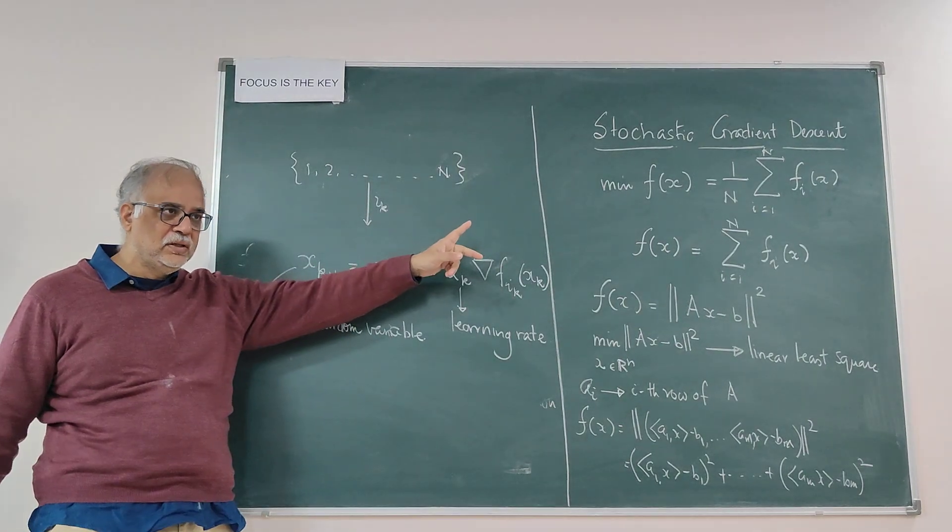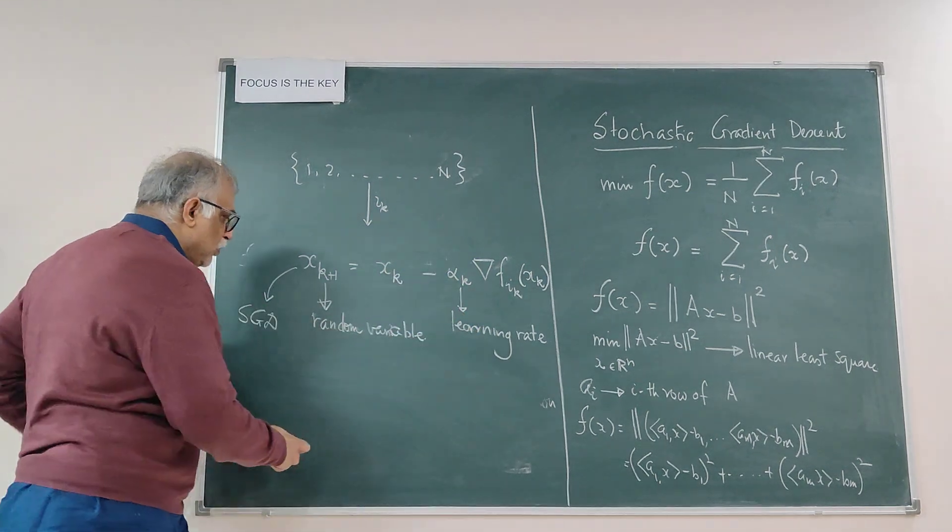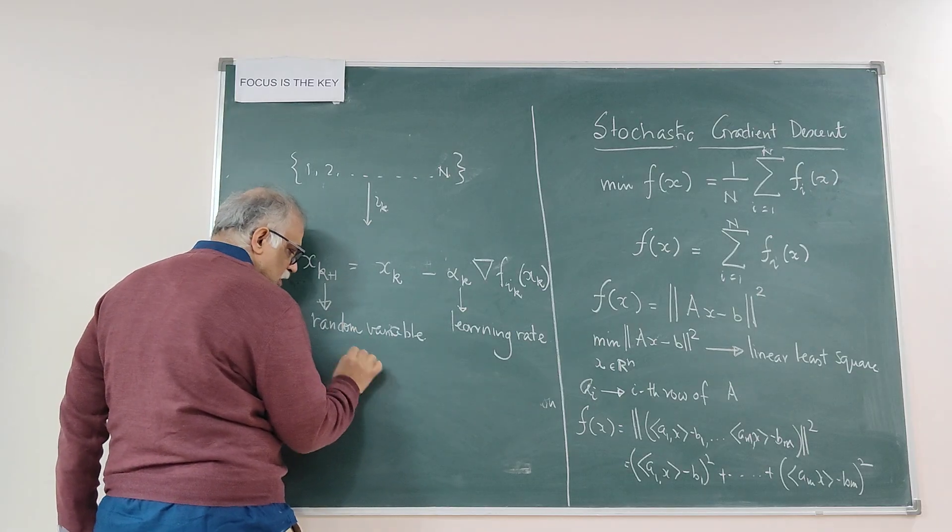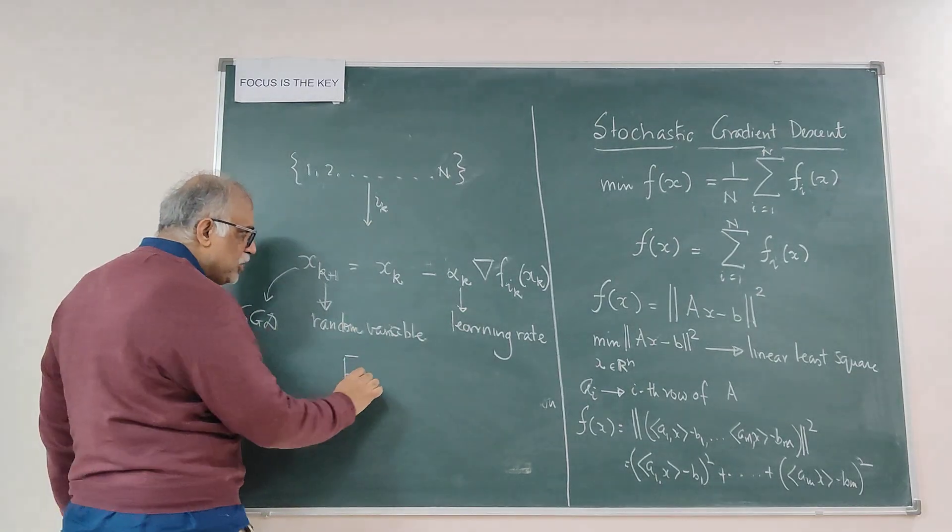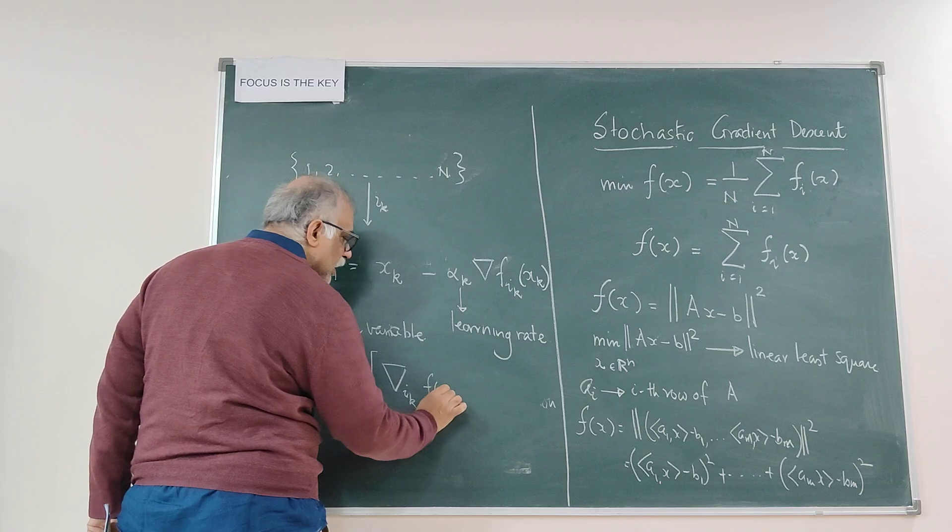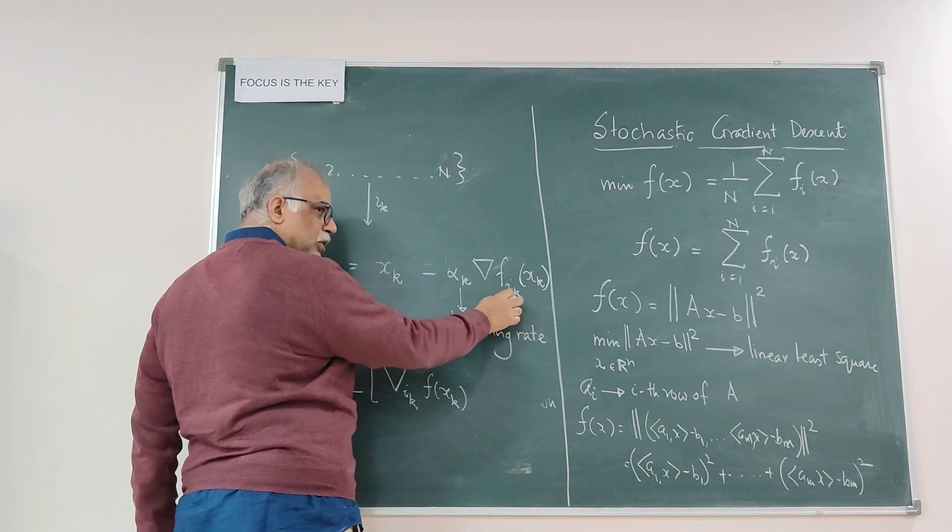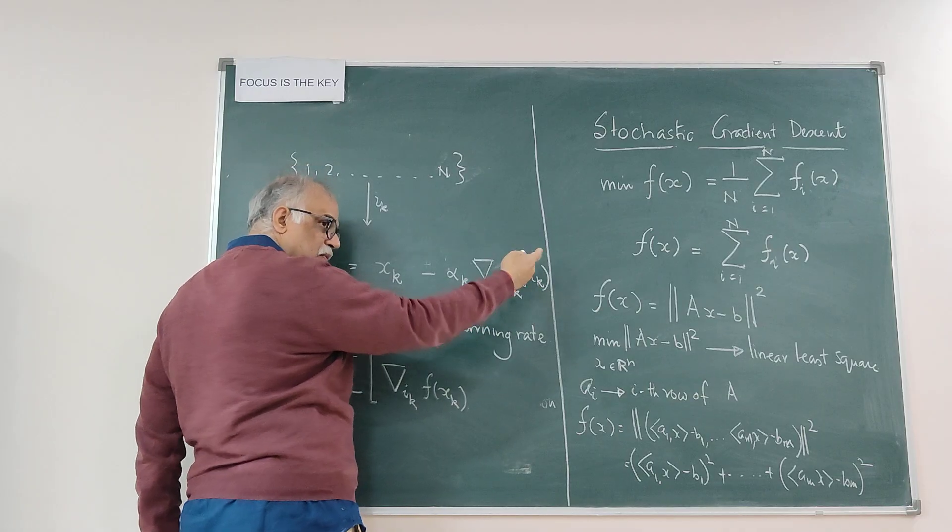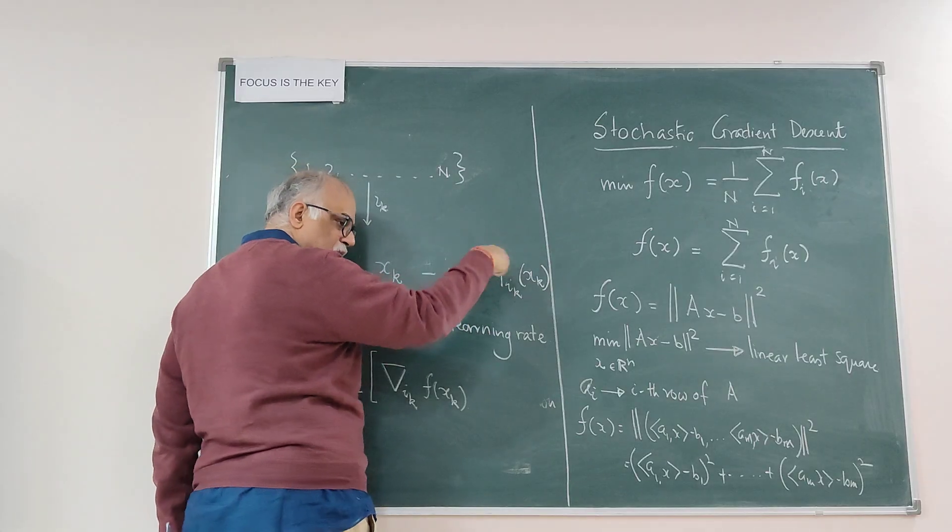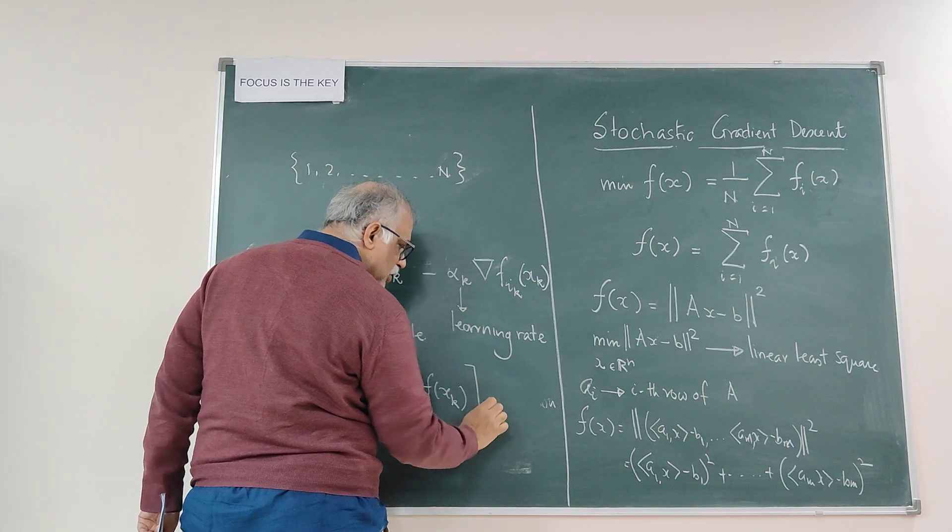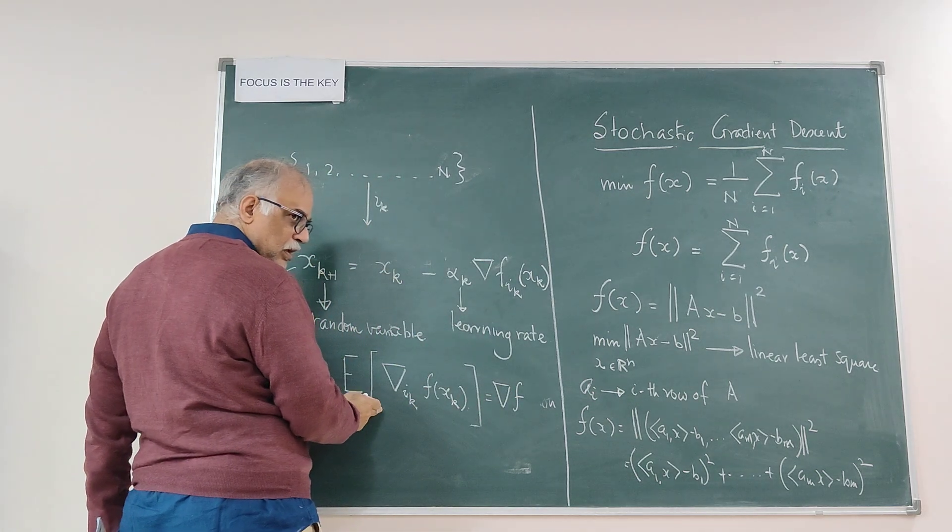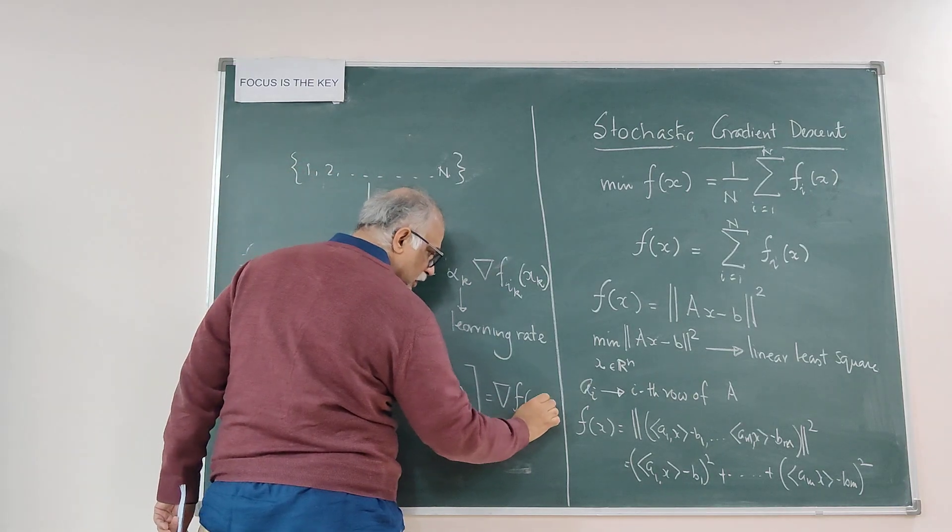To match it up with gradient descent, we have to assume one very important fact: the expectation of ∇f_{i_k}(x_k) - because now this has been randomly chosen, this is a random variable, and x_k was a random variable because it came through that random choice - the expectation of this is always assumed to be ∇f(x_k). So essentially we are constructing at every moment unbiased estimators of the gradient of f(x_k).